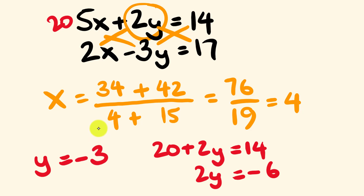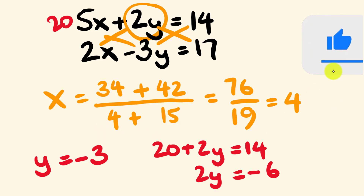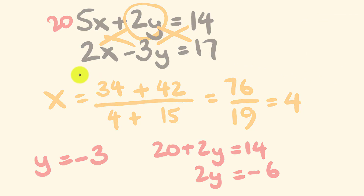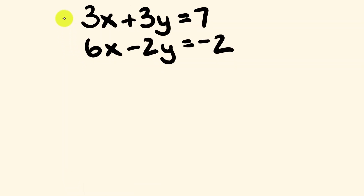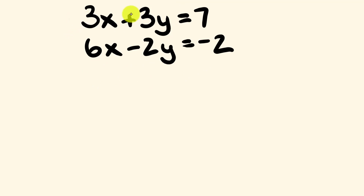So how did you go with that one? Hopefully pretty well. Let's now have a look at the third example — and if you get this one, you're going to write something absolutely tremendous about yourself in the comments. So first off, we have 3x plus 3y is equal to 7, and 6x minus 2y is equal to negative 2. Once again, we're solving for x and for y.